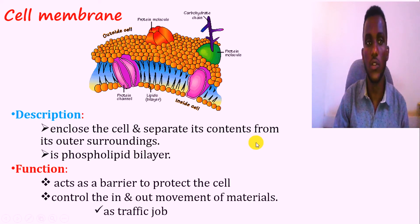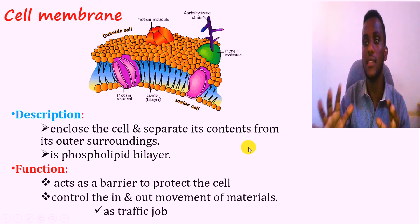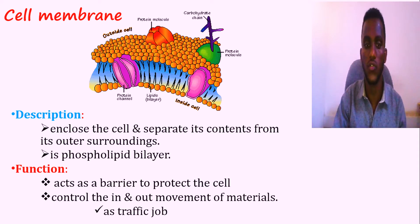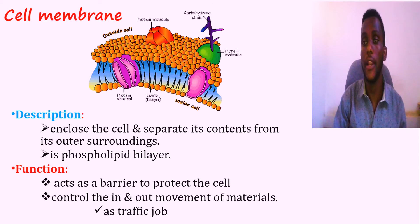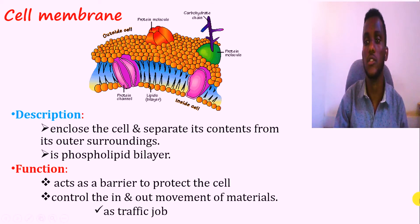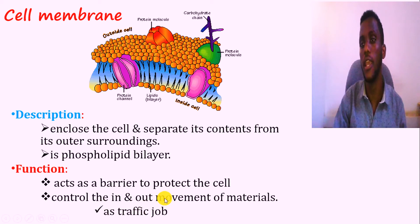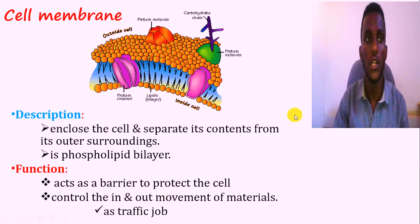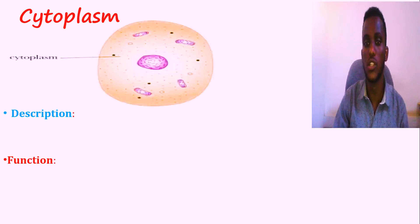The functions of the cell membrane are important. One function is that it acts as a barrier that protects the cells from danger. The cell membrane is also important for controlling the in-and-out movements of molecules or materials — acting like traffic control for transport of material. Next to the cell membrane is the cytoplasm, which is a fluid structure.